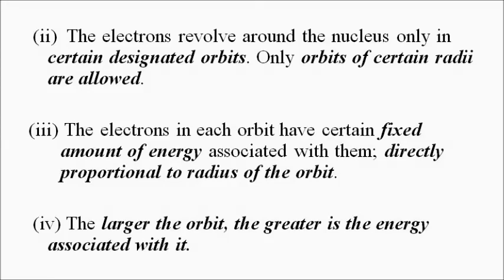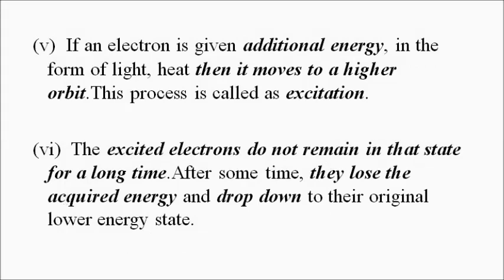Another important thing from the point of view of our discussion related to semiconductors is the transition of electrons from one orbit to another. If an electron revolving in any orbit is given some additional energy — in the form of photons, light, or heat — it moves to a higher orbit. After absorbing the energy, that electron will move to a higher energy orbit, and this process is called excitation.